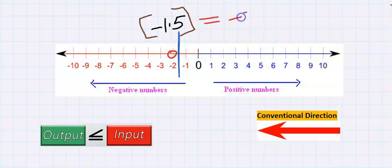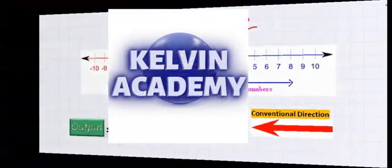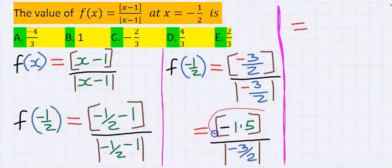Hence, this is minus 2. That is, all this becomes minus 2. Hence, everything at the numerator becomes minus 2.